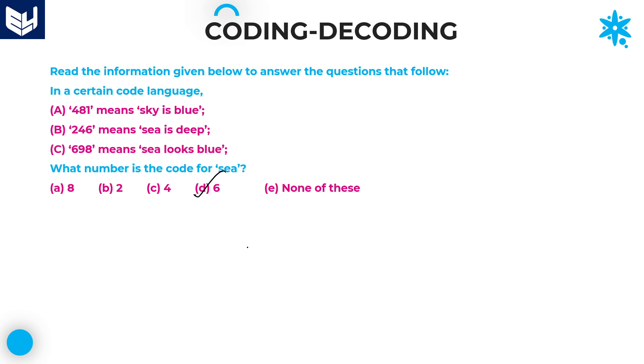Once you got that entire table, directly you can keep the answers accordingly. If you see the fourth question - looks. Looks is not there in any of the sentences, that is nine. So obviously looks equals nine, option A. Option A is the right answer.